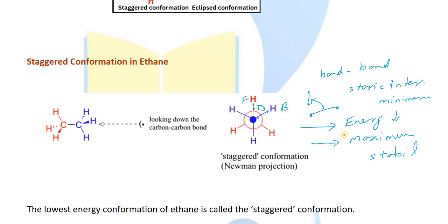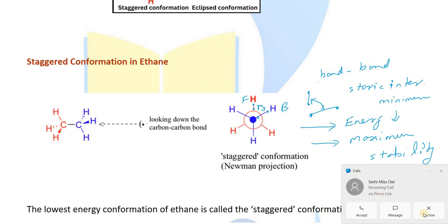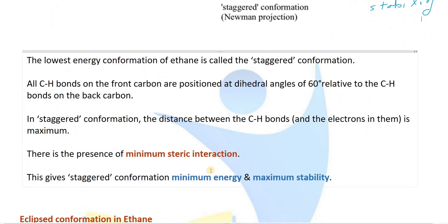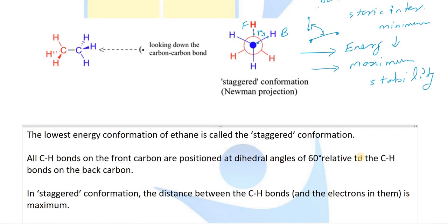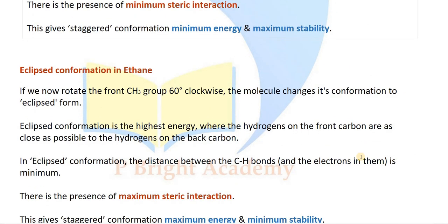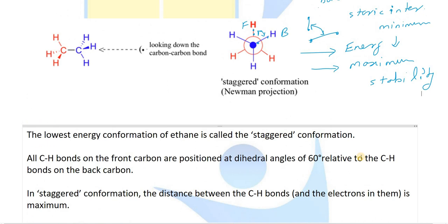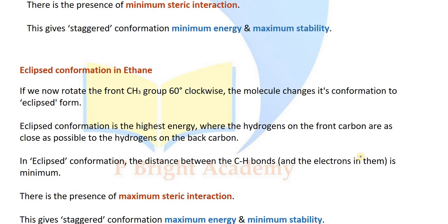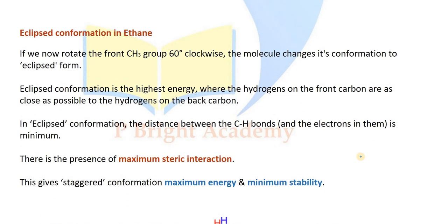Minimum energy gives maximum stability in the case of staggered conformation. In the eclipsed conformation, the hydrogen positions of front and back carbons are exactly aligned, giving minimum distance between the hydrogens.